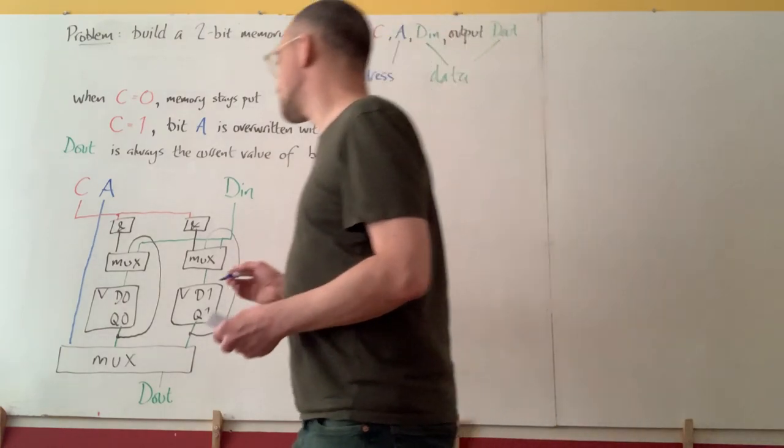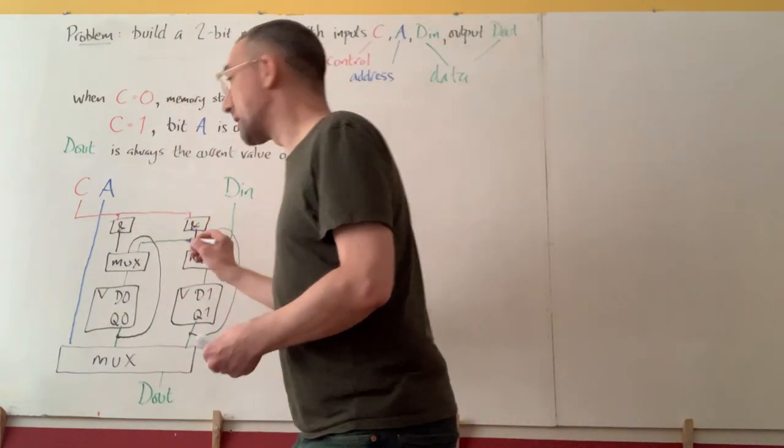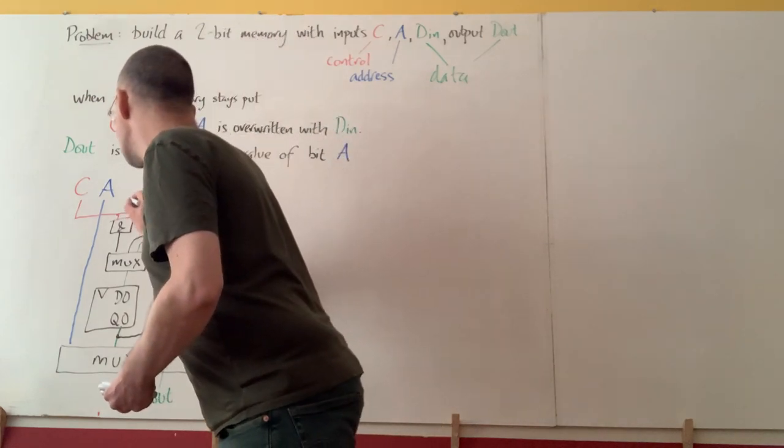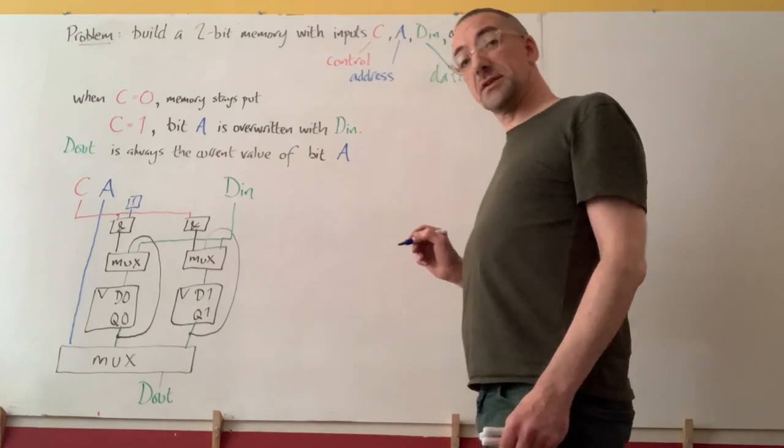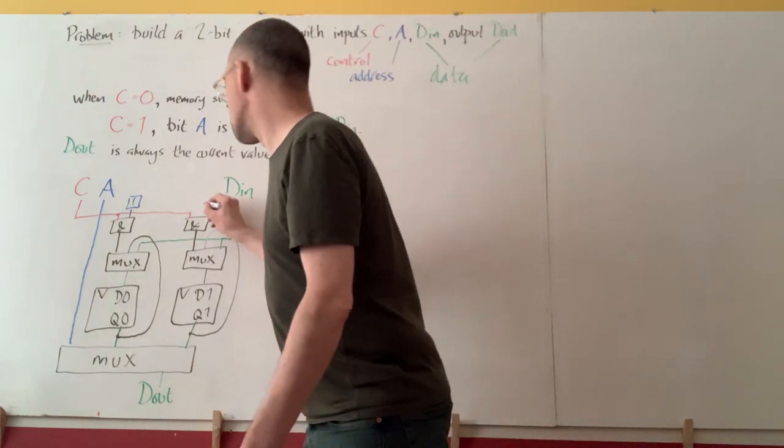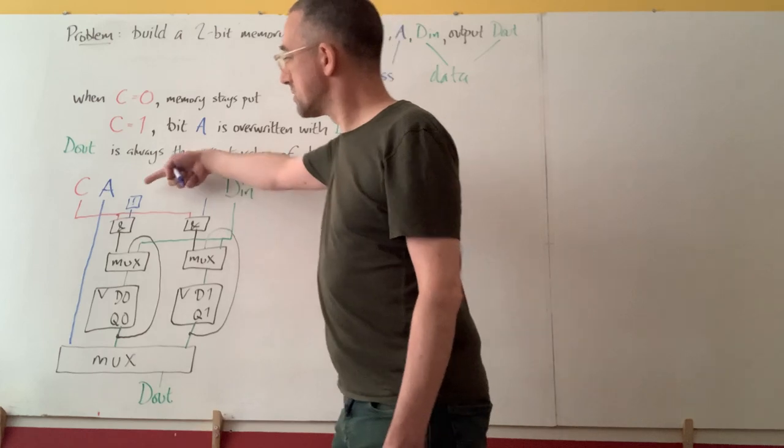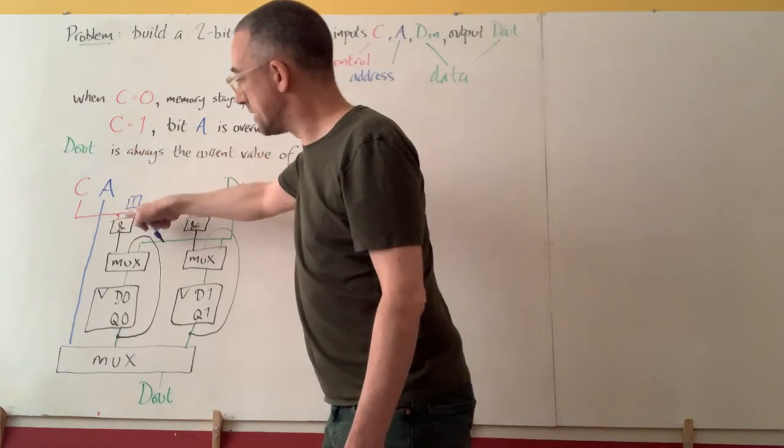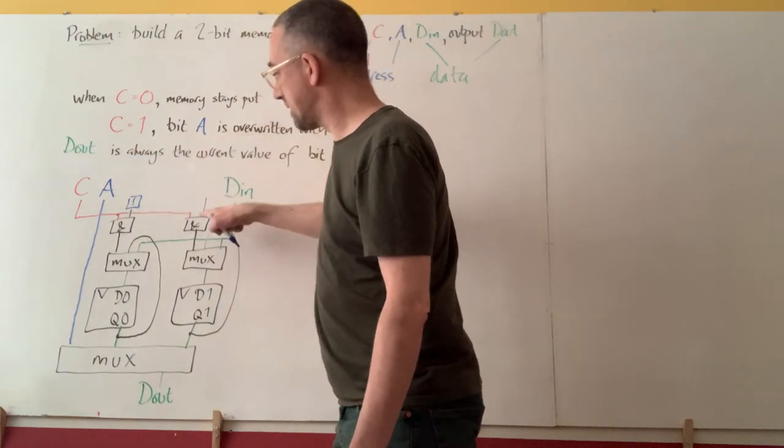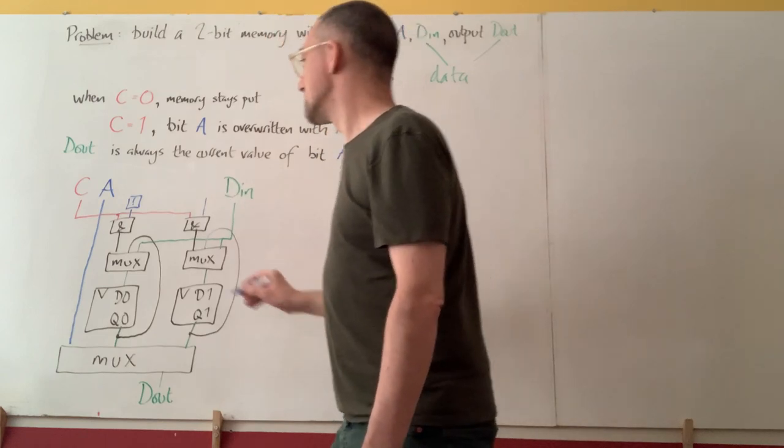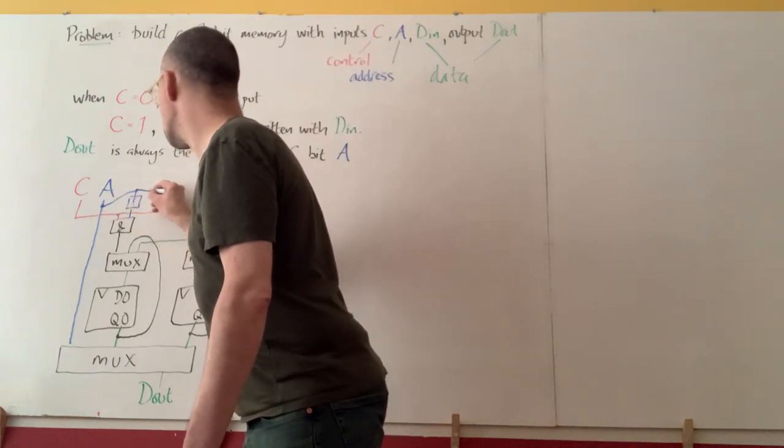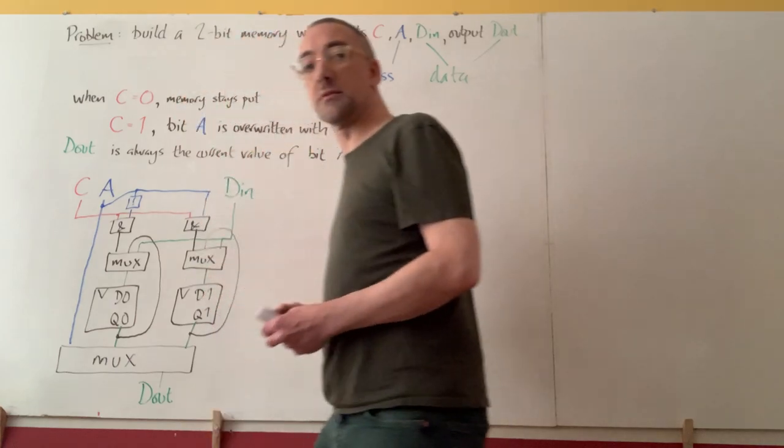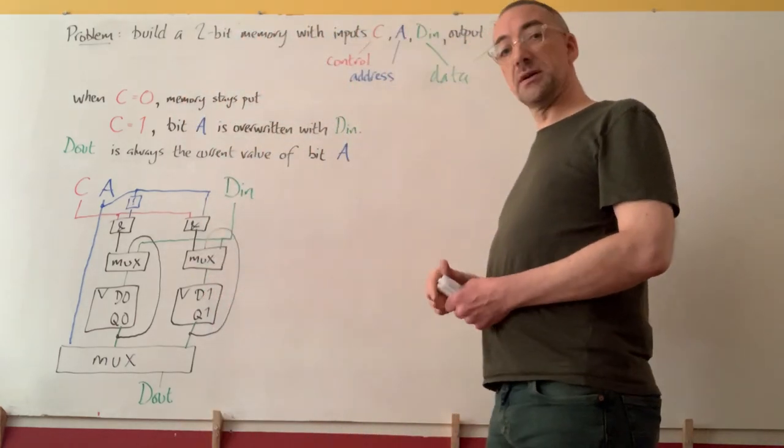So the detector for memory location zero is straightforwardly a NOT gate. And the detector for memory location one is straightforwardly a piece of wire. So when zero comes in here, this is one. When one comes in here, this is one. So what we then do is wire the address line also up to those detectors. And we've built our memory.